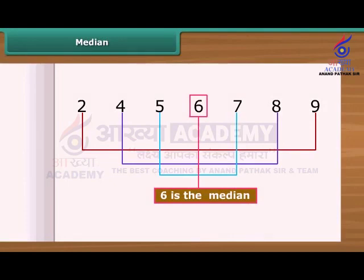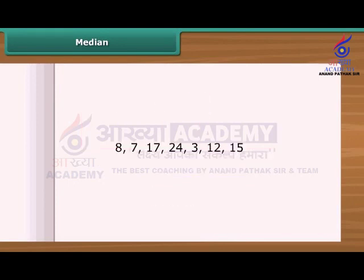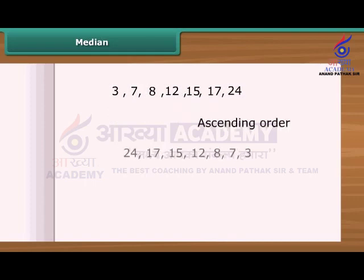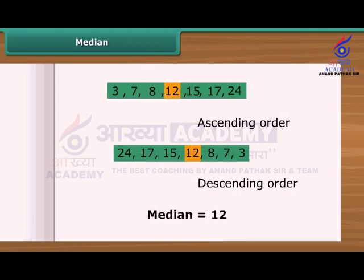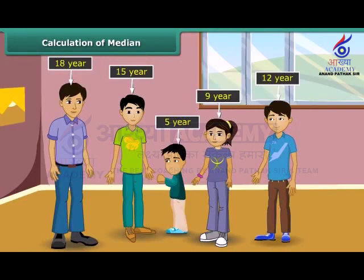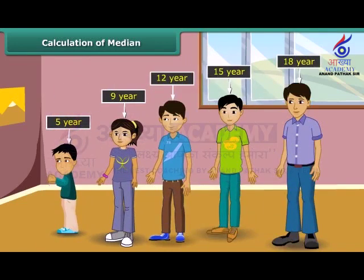Median is the value which lies in the middle of a group of numbers that have been arranged in order by size. Let us find the median of these numbers. Firstly, we need to put these numbers either in ascending or descending order. You can see the middle number is 12 — it has 3 numbers to its right and 3 numbers to its left. So the median is 12. The Goyangar family has 5 children aged 9, 12, 5, 18 and 15. What is the age of the middle child? First of all, we should order the children's ages from least to greatest. The age of the middle child is the middlemost number in the data set, which is 12. Likewise, you can find out the median of various data.